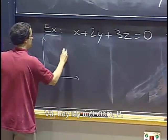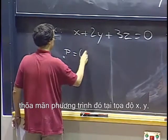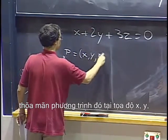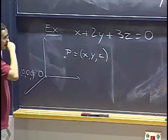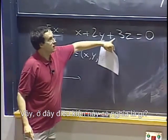And let's take a point P that will satisfy this equation or not, at coordinates x, y, z. So what does this condition here mean?